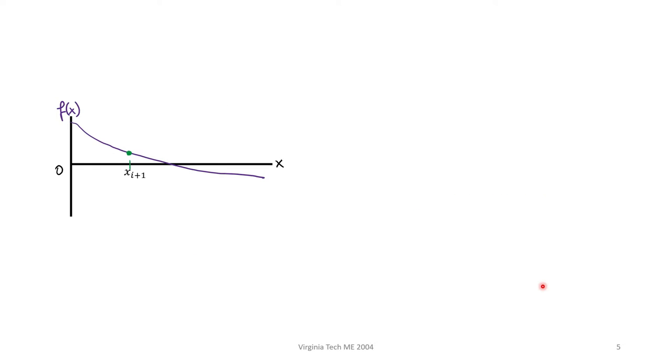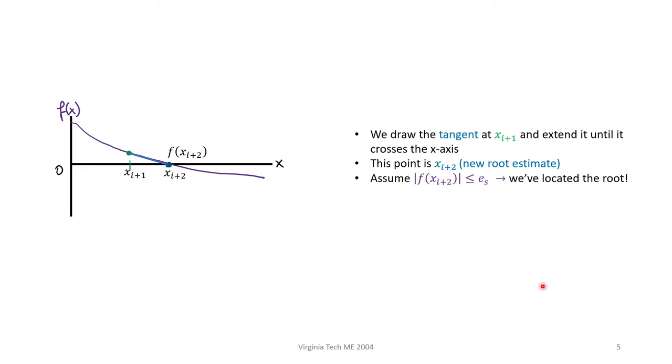Okay, we just found x sub i plus 1, but we need to iterate again. We need to ride the tangent all the way down to the x-axis until we hit our next root estimate, x sub i plus 2. We see that this new point is much closer to the actual root. Let's assume that this time, we meet our stopping criterion, so we can say that we found the root.